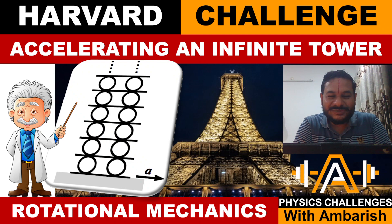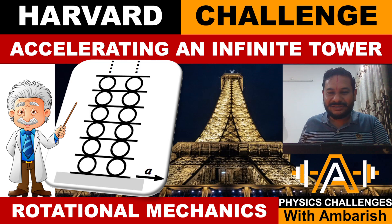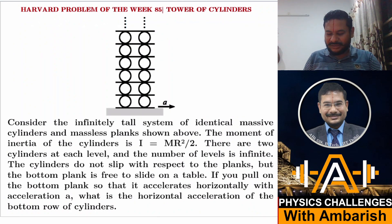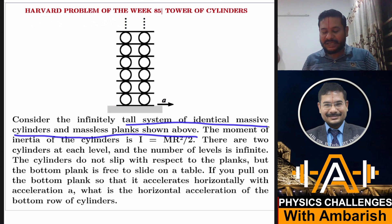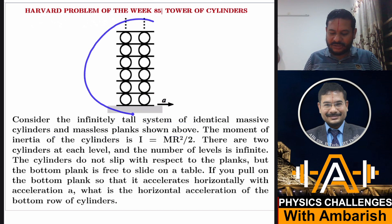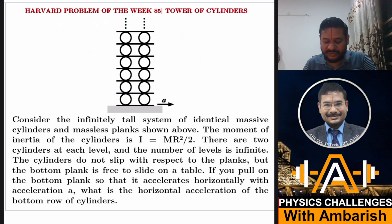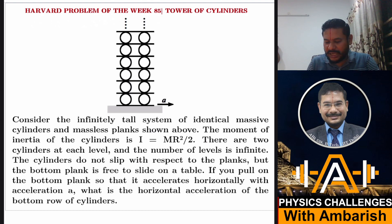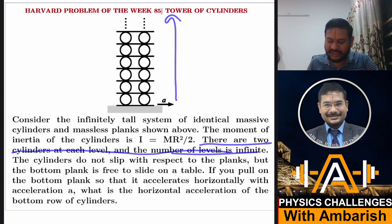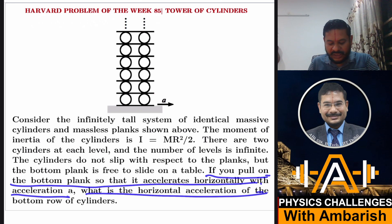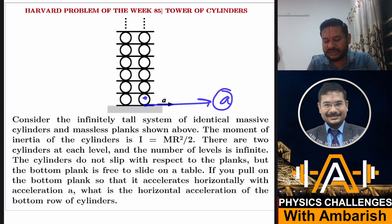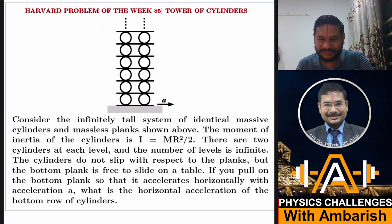Let me get straight into the problem. Consider the infinitely tall system of identical massive cylinders and massless planks as shown. The cylinders are massive and the planks are massless. The moment of inertia of the cylinders is I = ½MR². There are two cylinders at each level, and the number of levels is infinite. The cylinders do not slip with respect to the planks, but the bottom plank is free to slide on the table. If you pull on the bottom plank so that it accelerates horizontally with acceleration a, what is the horizontal acceleration of the bottom row of cylinders?